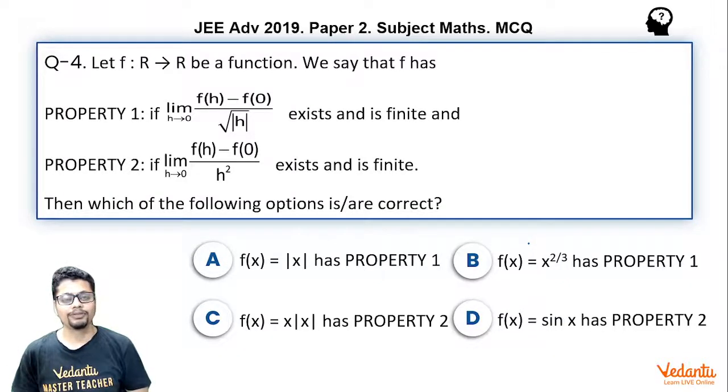Let f: R → R be a function. We say that f has Property 1 if lim(h→0) [f(h) - f(0)]/√|h| exists and is finite. We say that f has Property 2 if lim(h→0) [f(h) - f(0)]/h² exists and is finite. Then which of the following options is or are correct?